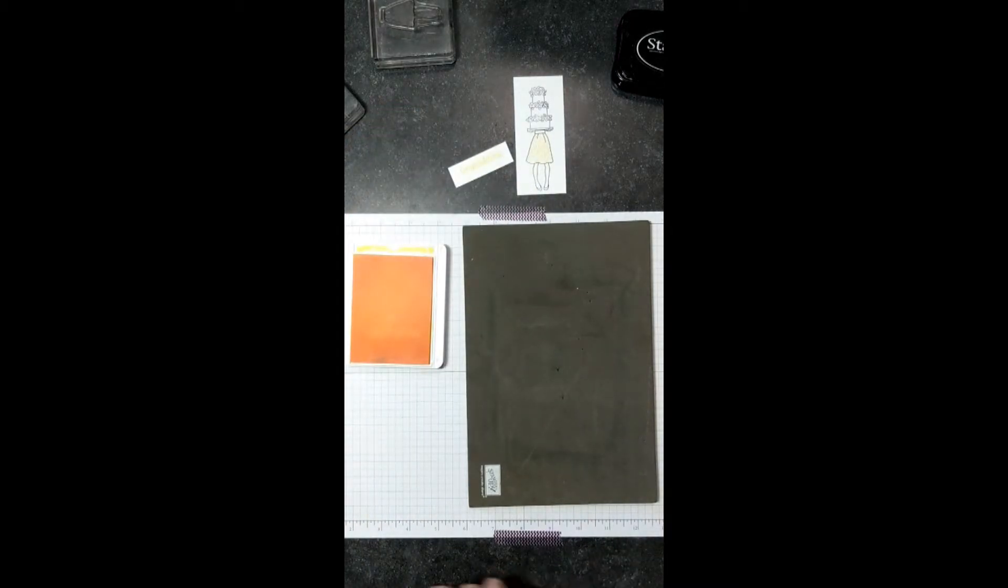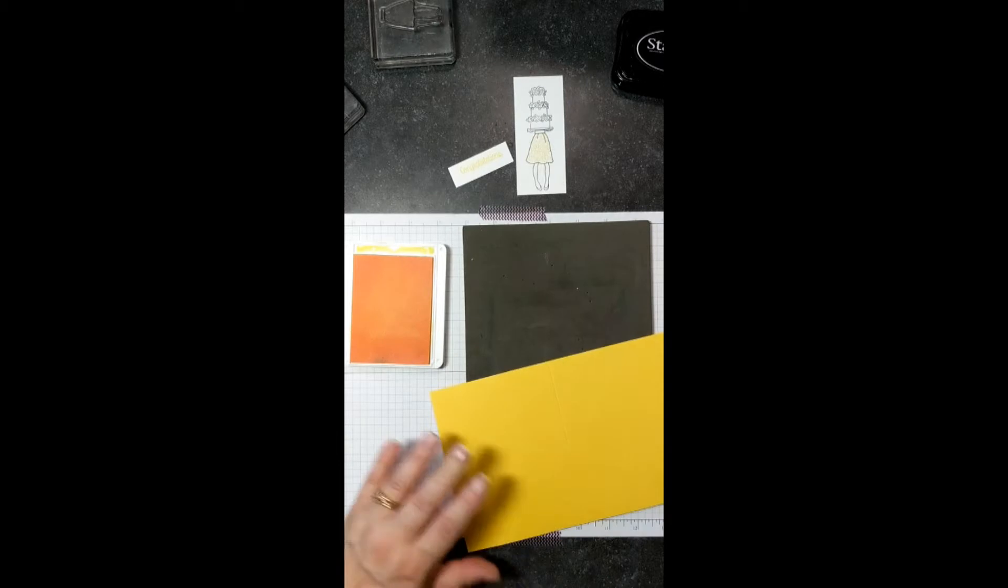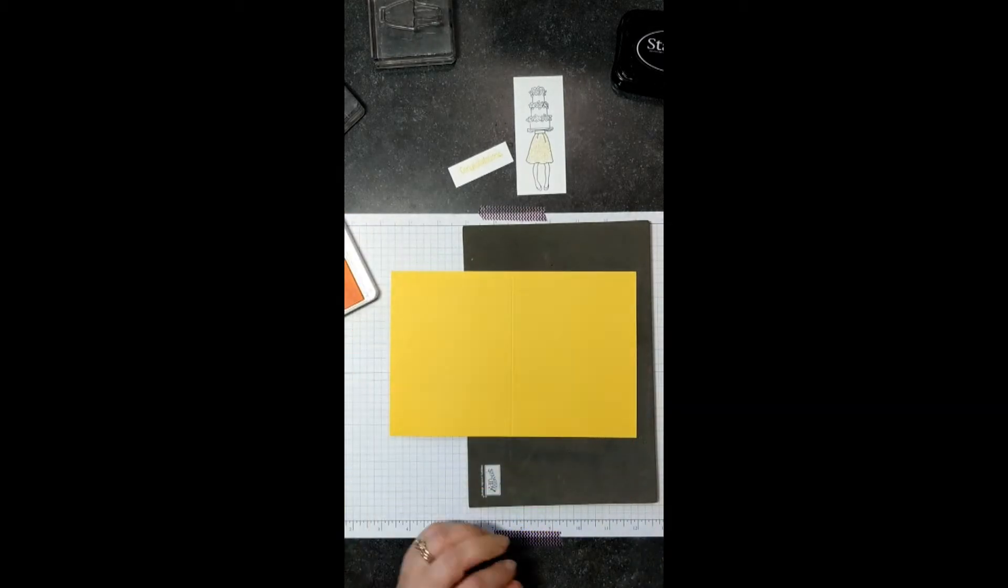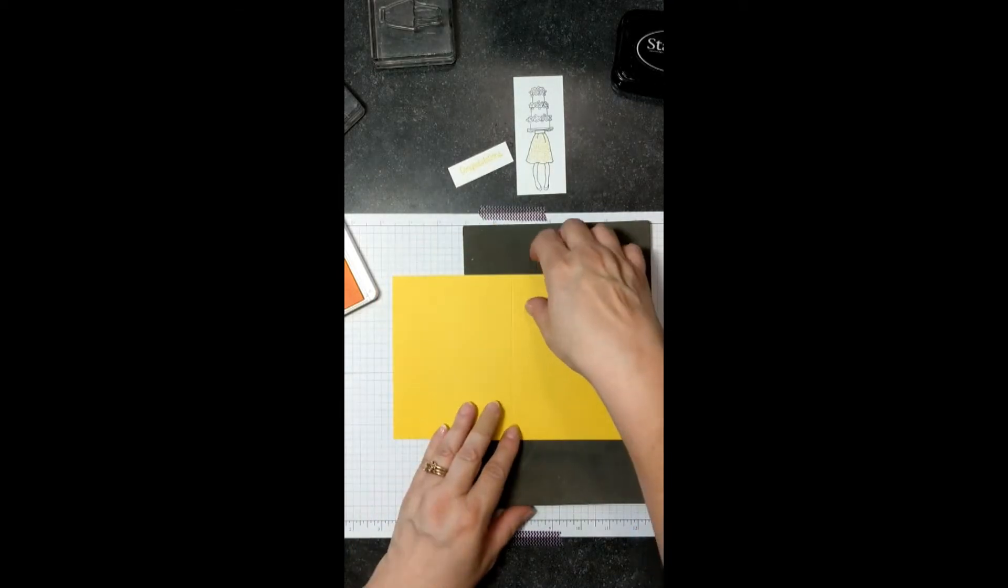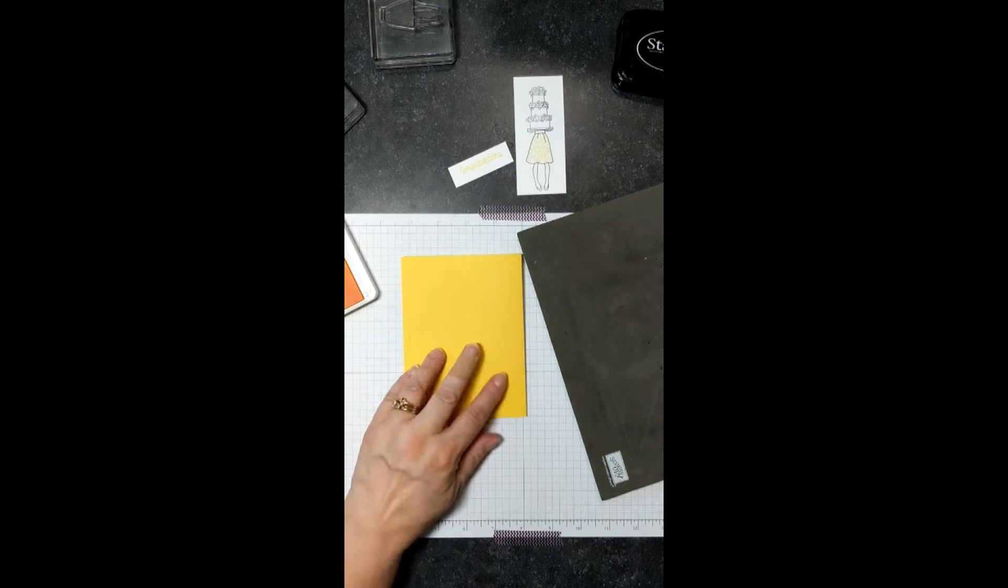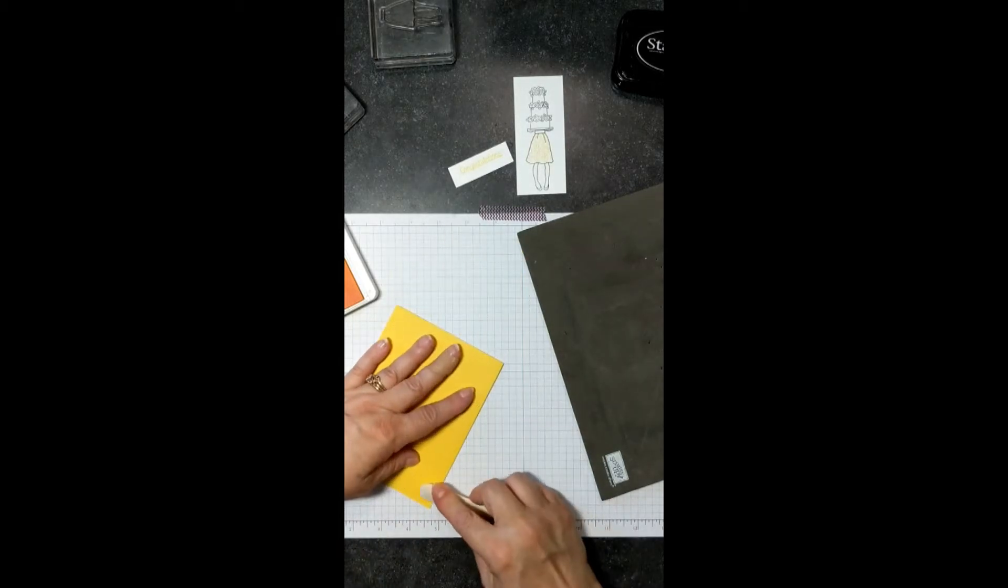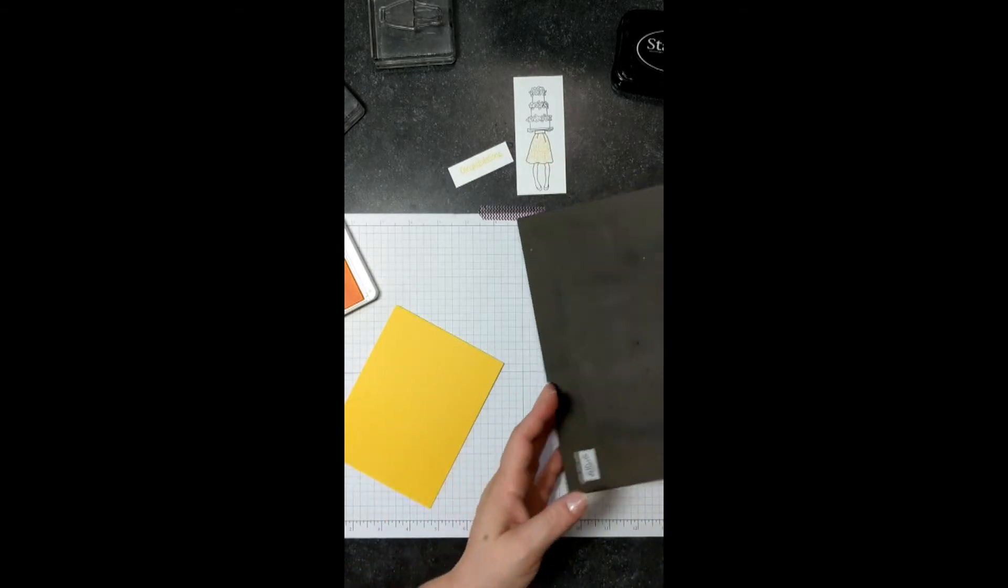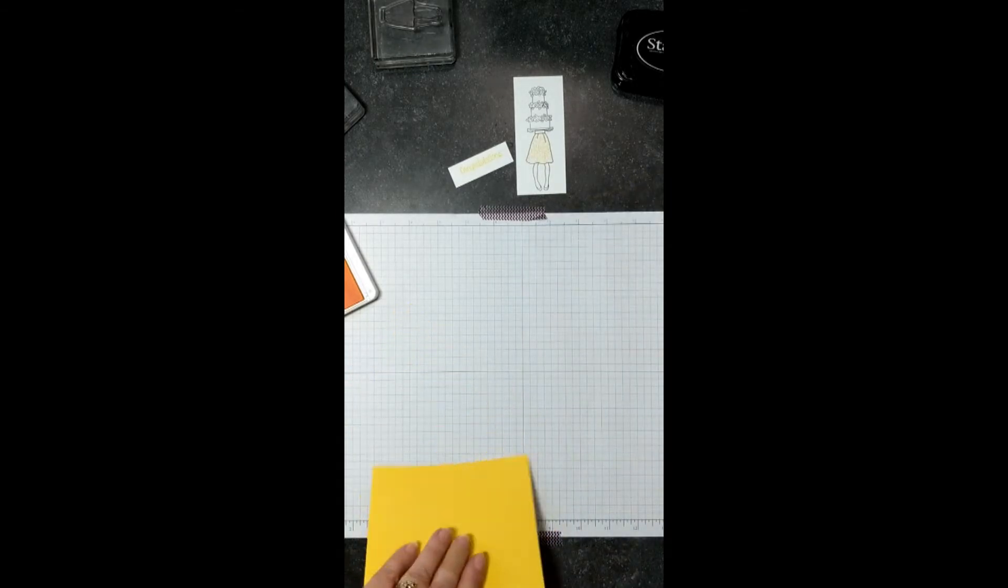Now get your cardstock. This is 8 1/2 by 11. Cut it 5 1/2 and score it at 4 1/4. And then I want to go ahead and fold it. And I will use my bone folder to get a nice crease.